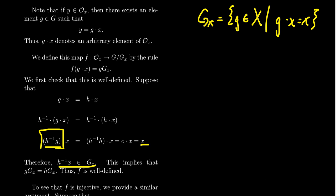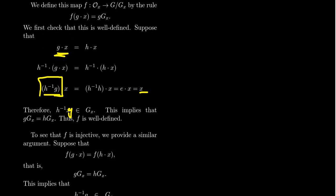So therefore h inverse g stabilizes x. h inverse g belongs to G sub x. It stabilizes it like so. So if h inverse g belongs to G_x, that means that g and h represent the same coset of G_x. So therefore this map is in fact well-defined. It doesn't matter which representation of the element you choose, g or h, you'll get the same coset with respect to the stabilizer.